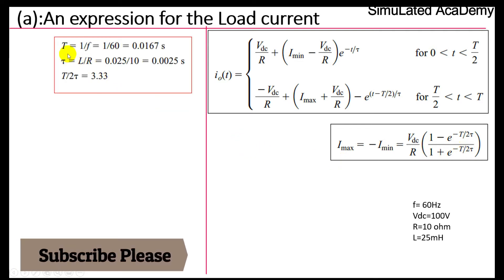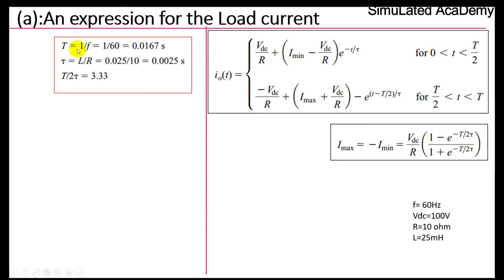First, we calculate T. T is inversely proportional to frequency, so T = 1/F = 1/60, which gives T = 0.0167 seconds. Similarly, the time constant τ = L/R = 25 mH / 10 ohm = 0.0025 seconds.